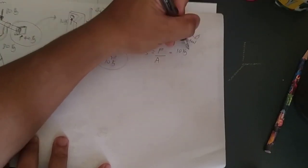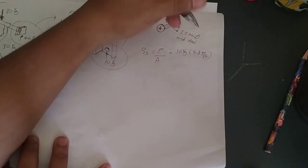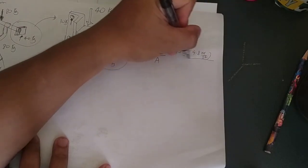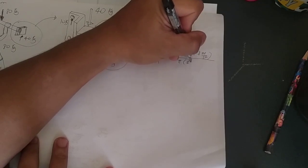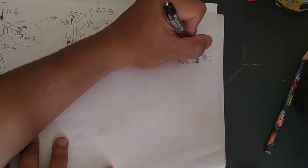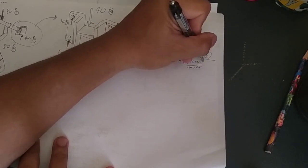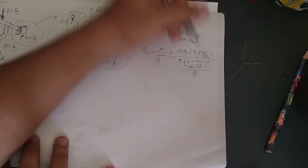The force is basically 10 kilogram multiplied by 9.8 meters per second squared. 9.8 meters per second squared is the acceleration due to gravity. This is divided by the area. The area will be π multiplied by 2.5 mm. I'm going to divide it by 1000 to convert it to meters, and then we square that and divide it by 4.